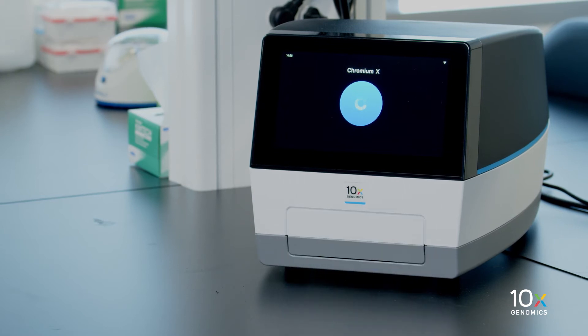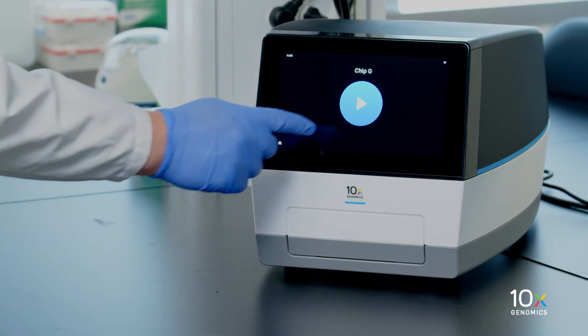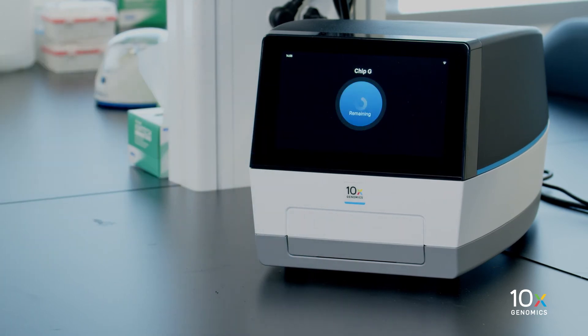We confirm the Chromium instrument identifies the correct chip configuration, in this case ChromiumChipG. Then we initiate the run by pressing the play button. The run will take approximately 18 minutes.